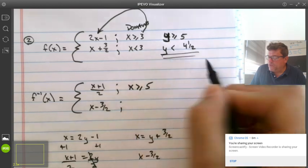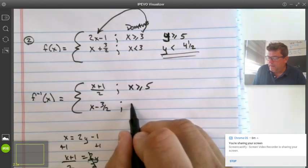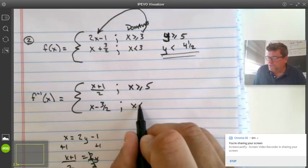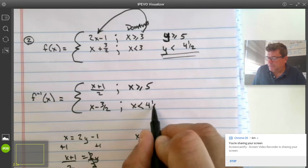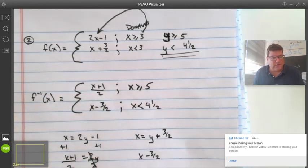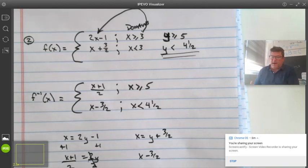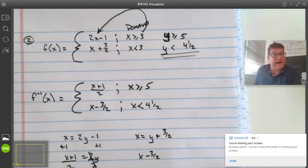The range of the original becomes the domain of your inverse. Switch x and y even on the domains. I hope that makes sense to everybody. If not, shoot me an email and ask some questions. We will talk to you soon.